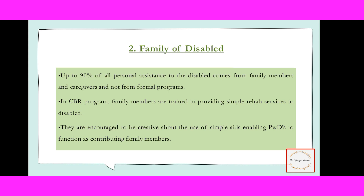The family of the disabled person is also a stakeholder. Up to 90% of all personal assistance for disabled persons comes from family members and caregivers, not from formal programs. Therefore, family participation in this process is very important. Family members are trained in CBR programs so they can provide simple rehabilitation services to the disabled person, and are encouraged to be creative in using simple aids to enable their family member with disability.